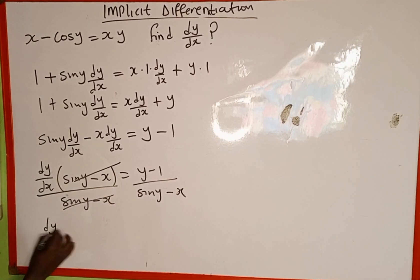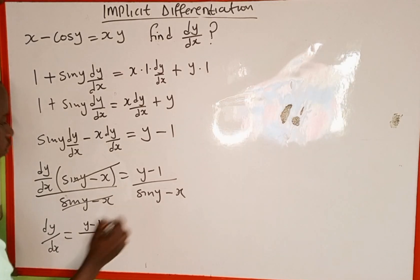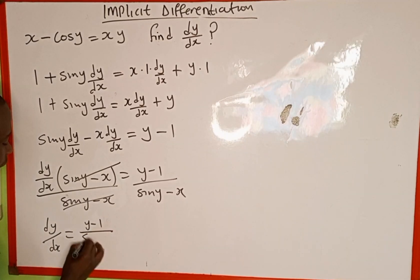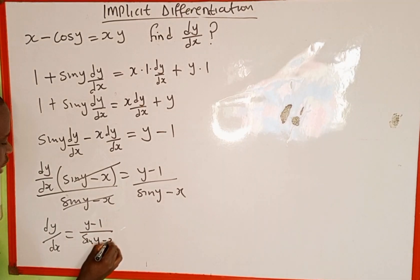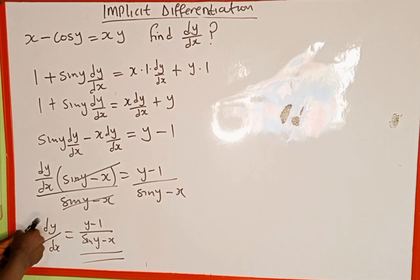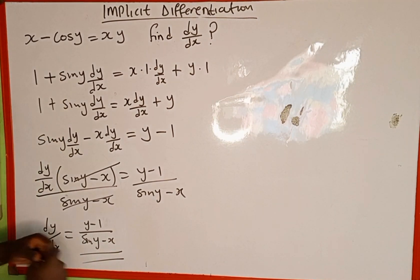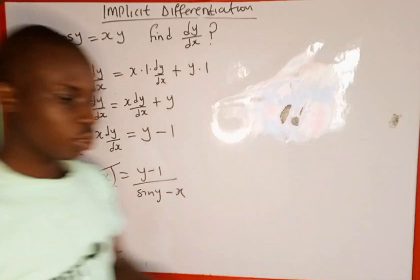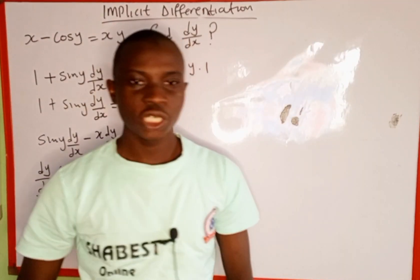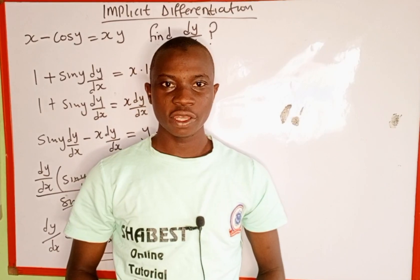We are left with dy over dx equals y minus 1, all over sine y minus x. So that is the derivative of this function with respect to x using implicit differentiation. Thank you for watching, and please follow and subscribe for more videos like this.